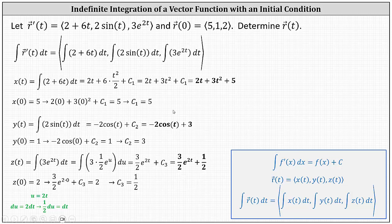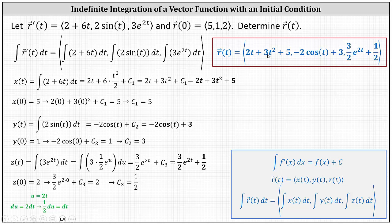Now we have the x, y, and z components of the vector-valued function r of t. We know r of t is the vector-valued function where the x component is 2t plus 3t squared plus 5, the y component is negative 2 cosine t plus 3, and the z component is 3 halves e to the 2t plus 1 half.